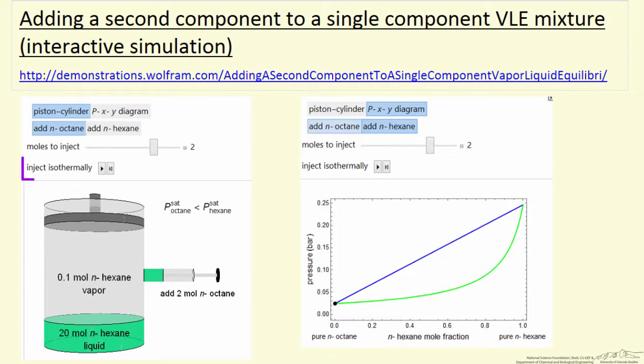We're going to do this isothermally, and when we select the play button, the plunger will inject the octane and we let the system go to equilibrium. We also have the option of reversing it and starting with octane and then adding normal hexane.